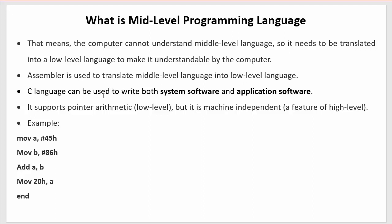C language can be used to write both system software and application software. If you have not seen my earlier videos of this playlist, I recommend watching them to understand what is system software and application software. C language supports pointer arithmetic, which is a low level feature, and it is also machine independent — meaning code written in C can be ported to another platform — which is a high level feature. So C supports both low level and high level features.